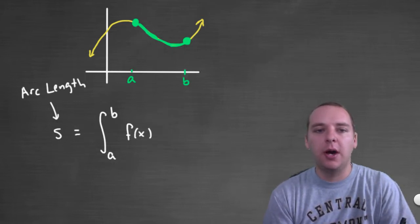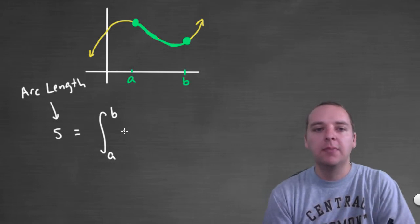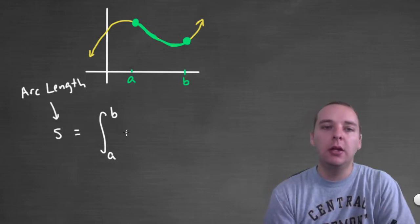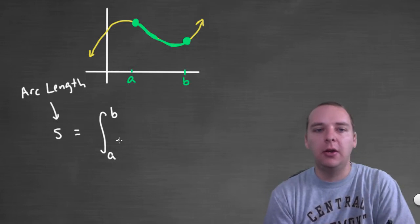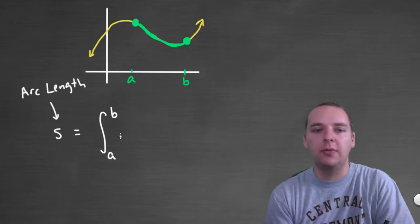So what we're going to do is we're going to modify this integrand. We're not going to put f, we're going to put something else to make this be length of a curve rather than the area under the curve. And here's the modified integrand.